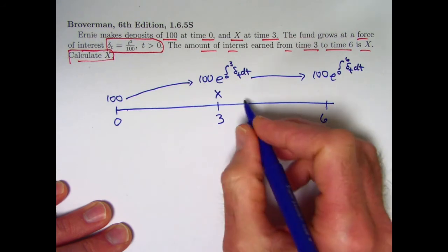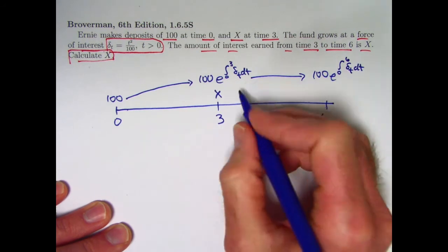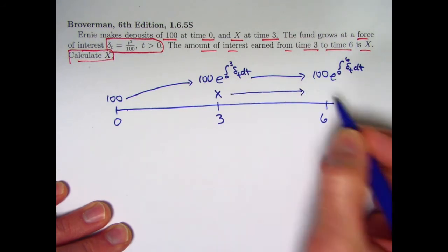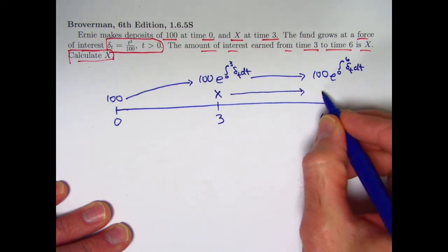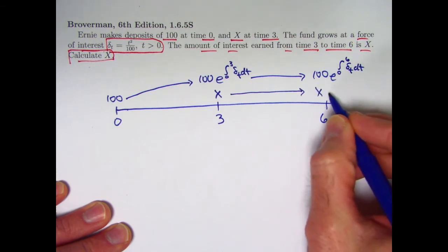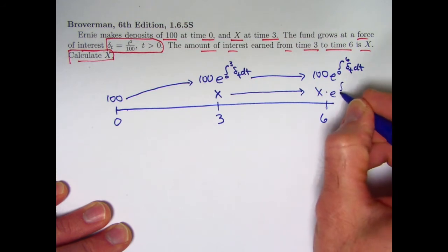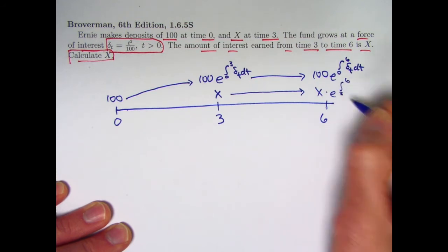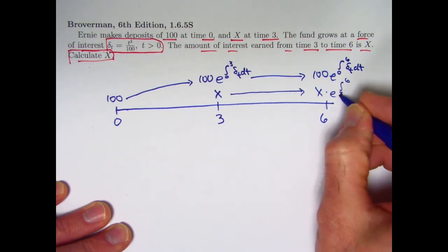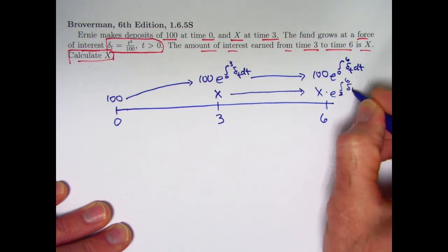What about x? x is also growing according to the same force of interest, but it's starting at time 3 rather than time 0. Therefore, you multiply x by e to the integral not from 0 to 6, but instead from 3 to 6. It's a 3 down there if it's difficult to see. The integral from 3 to 6 of the force of interest.